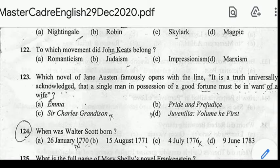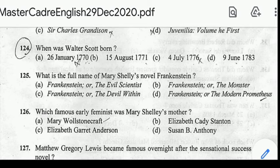Number 124: when was Walter Scott born? Correct answer: option B, 15th August 1771. Number 125: what is the full name of Mary Shelley's novel Frankenstein? Correct answer: option D, Frankenstein, or The Modern Prometheus.